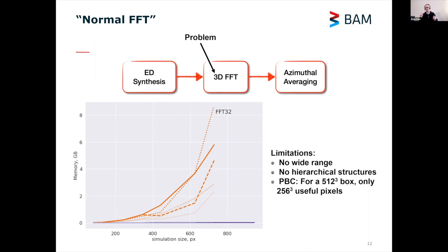On top of that, periodic boundary conditions play a role here. That means that if you have a 512 cubed box and you want to simulate the scattering of a non-periodic structure, you can only use the central 256 pixels because if you go beyond that, you start getting interference effects with its neighbor and that creates an imperfect scattering pattern.